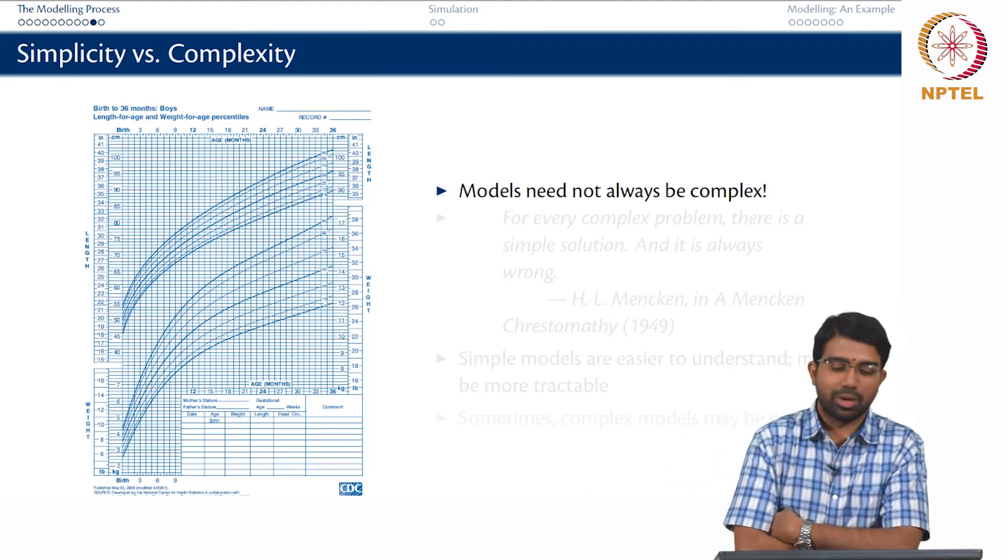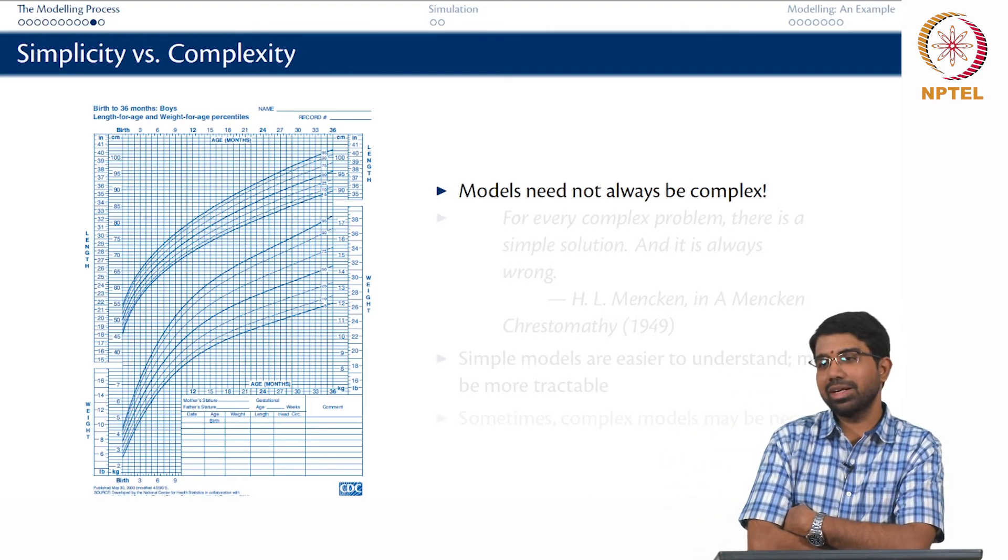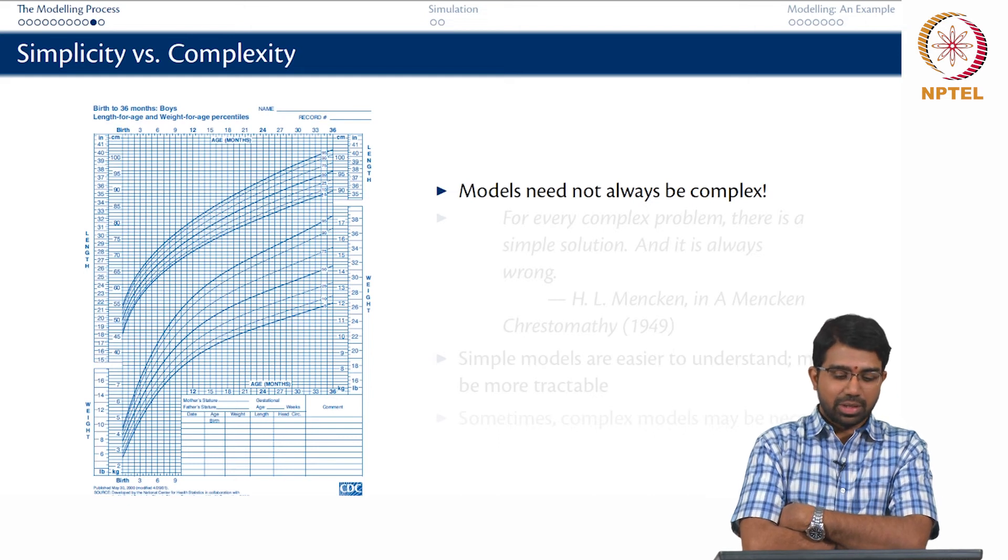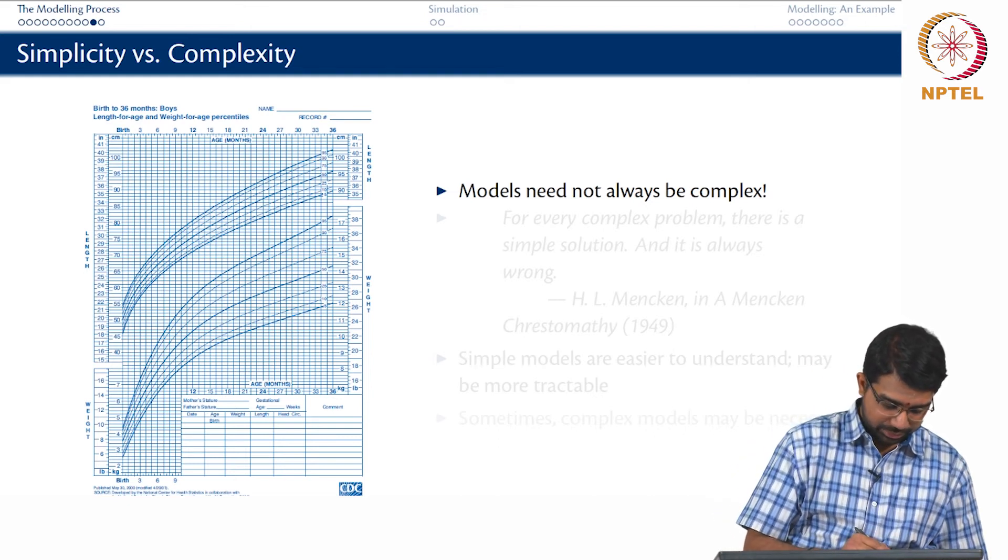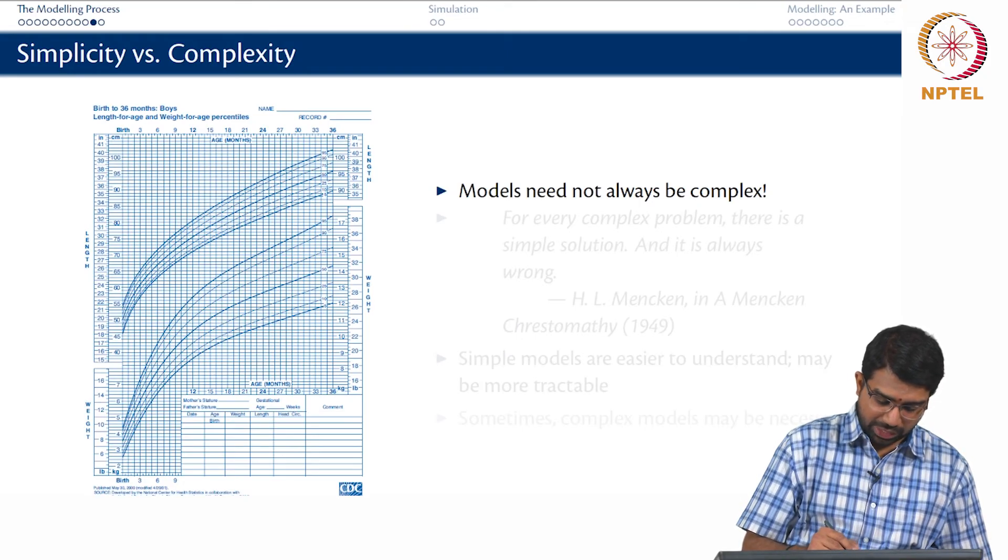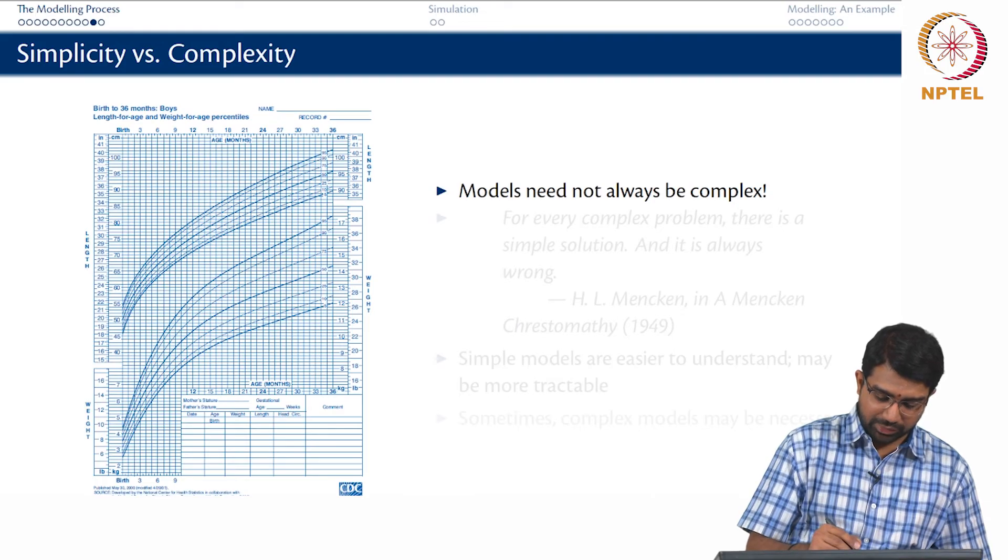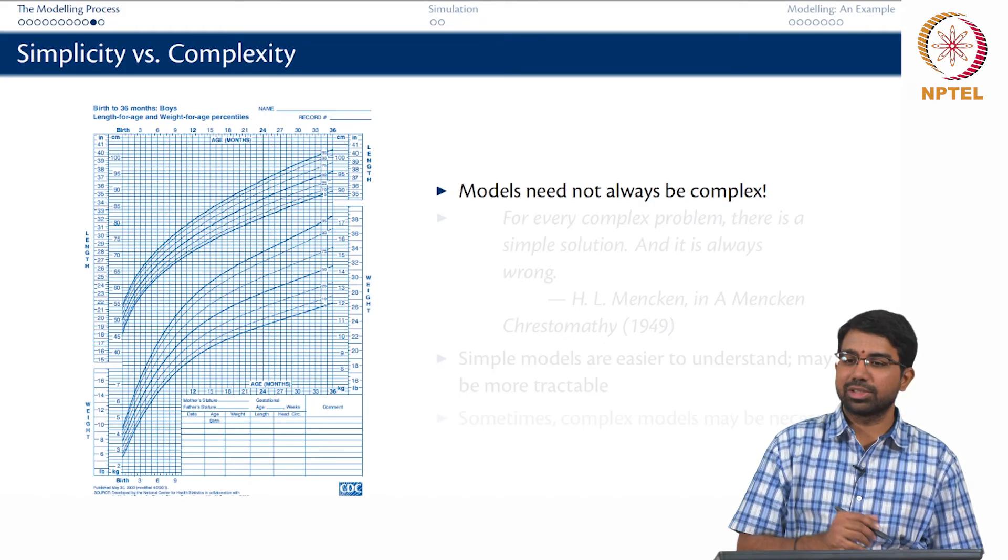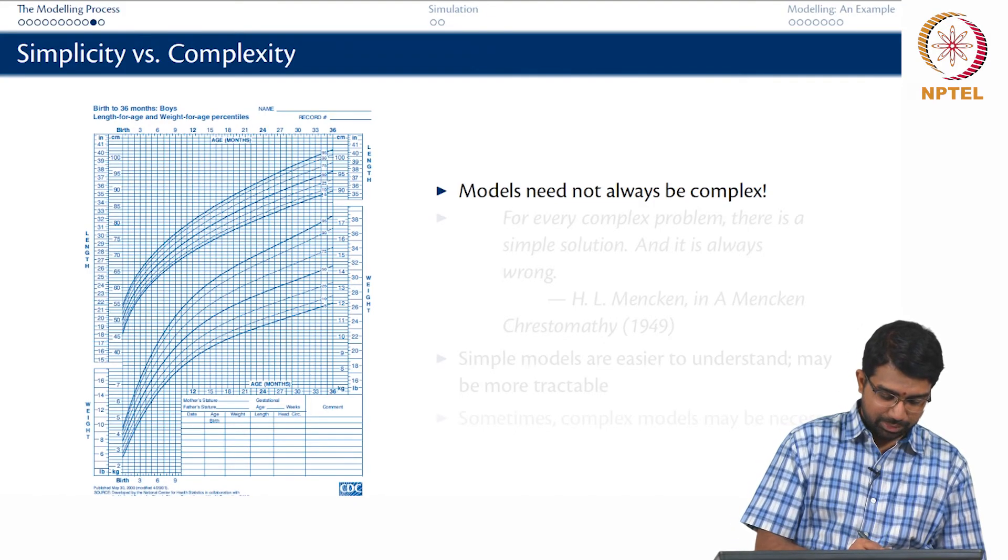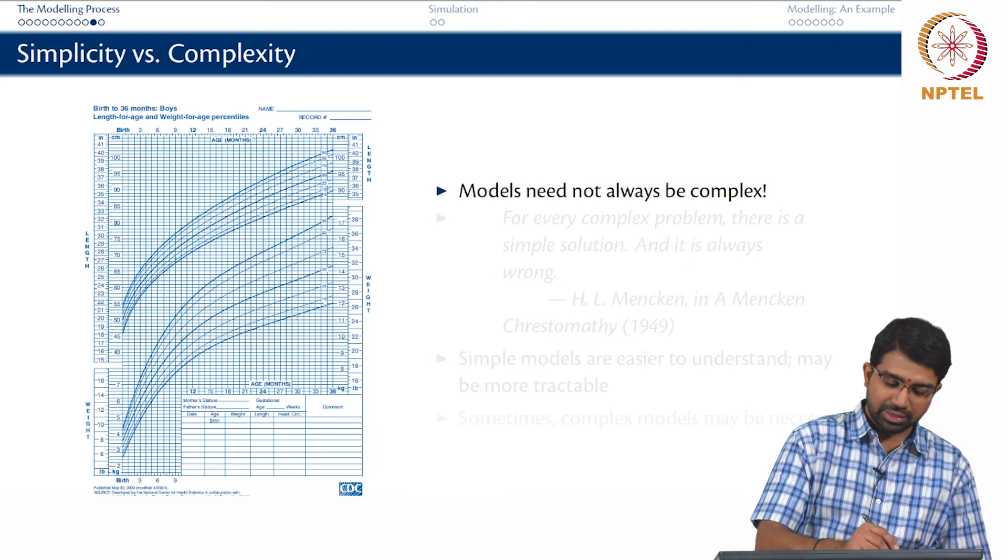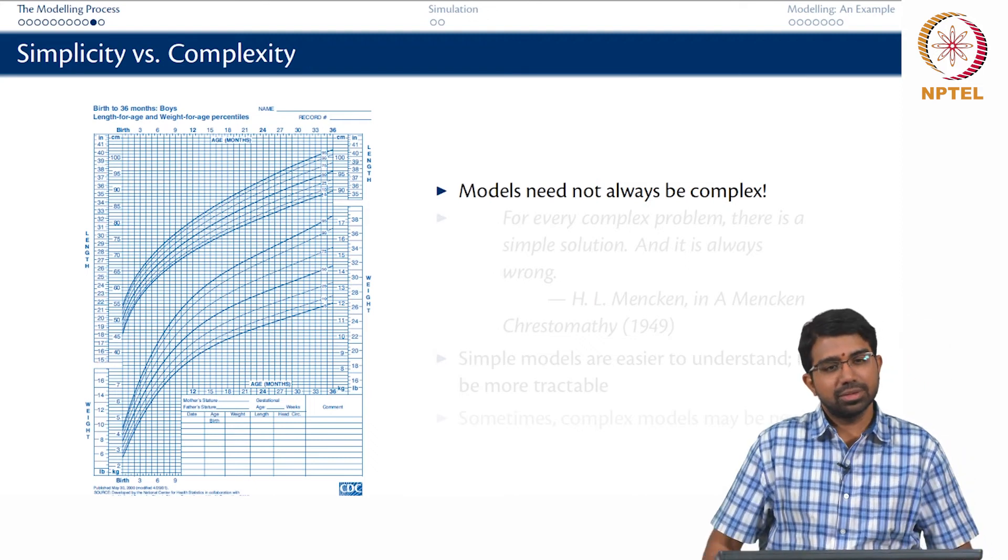And models need not always be complex. So this is a very simple model which says how height and weight are correlated. Or height and age or weight and age are correlated. So if you see there are many curves that you see here. So this curve basically says, so only 5 percentile of the people are below this curve and only 5 percentile of the people are above this curve. So basically this is the curve where 90% of the population falls in. So if this is the birth weight, this is how the child is expected to evolve. If this is the birth height, this is how the child is expected to evolve, reasonable.